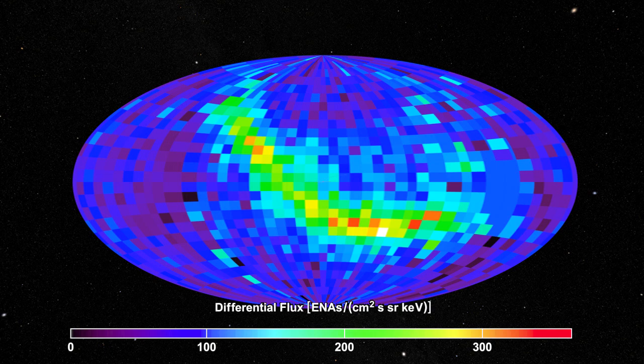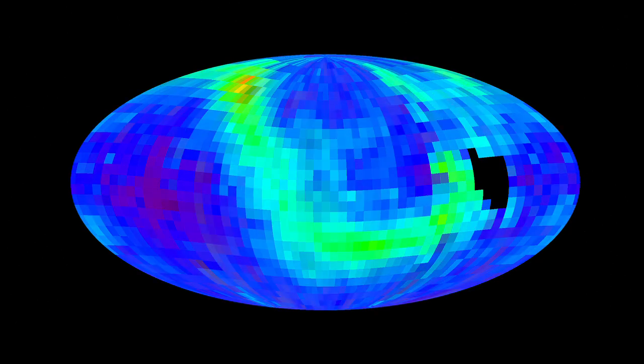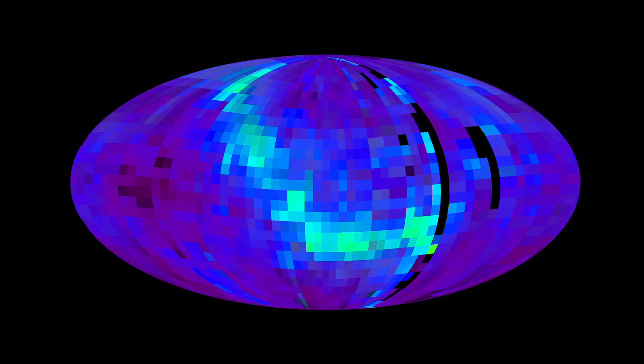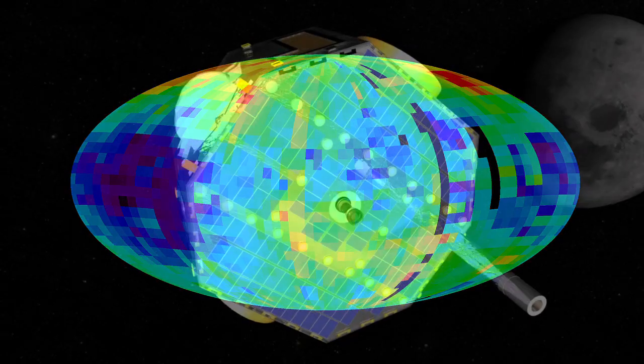IBEX can also tell how energetic each atom was and, much like filtering light to show one color, create an all-sky map of each energy level. Viewing the sky this way can reveal some startling things about the edge of the solar system.